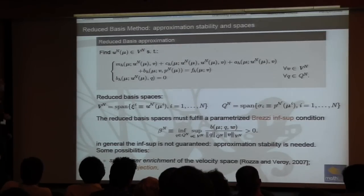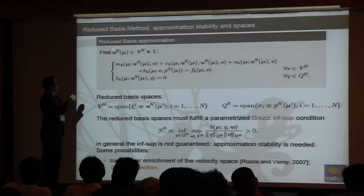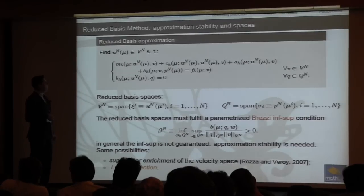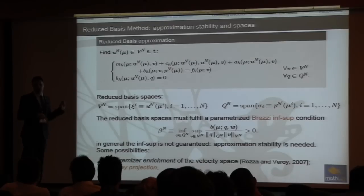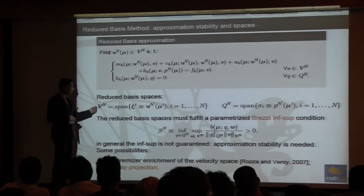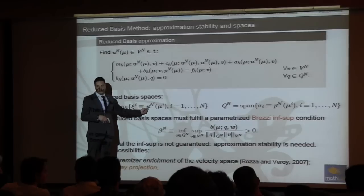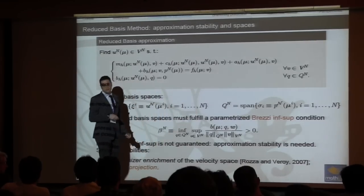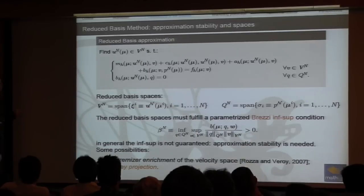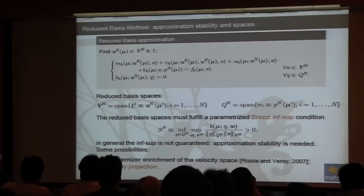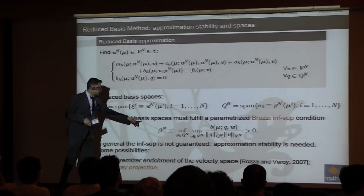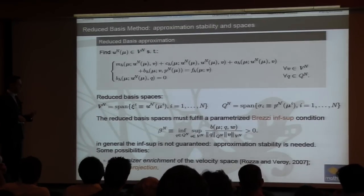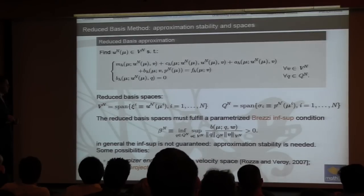In the reduced basis formulation, we find solutions in the span of reduced basis spaces. A key challenge is approximation stability: we build reduced basis spaces for velocity using velocity snapshots and for pressure using pressure snapshots, but we must also fulfill an inf-sup condition — the Brezzi inf-sup condition — and must enrich or stabilize the problem accordingly.